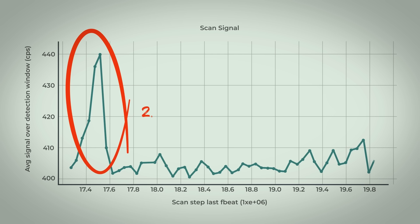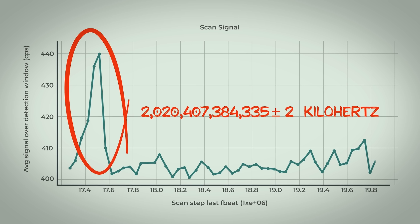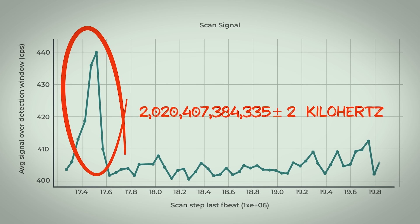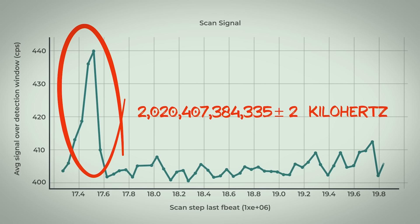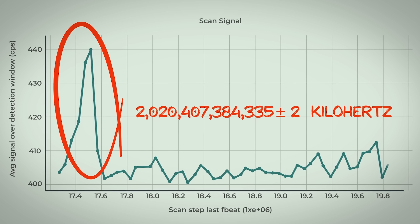It's a frequency of 2 trillion, 20 billion, 407 million, 384 thousand, 335 kilohertz. Plus or minus 2 kilohertz. This is an exciting first step towards building the world's first nuclear clock, and potentially rewriting the laws of physics.